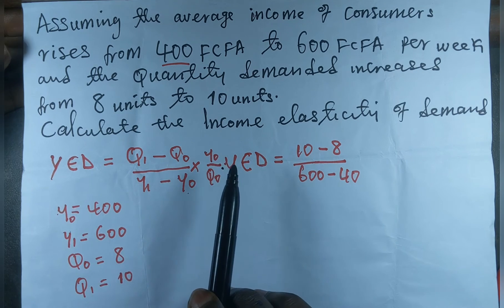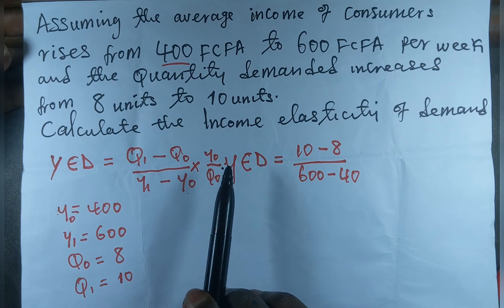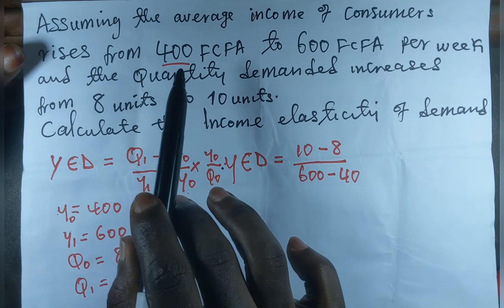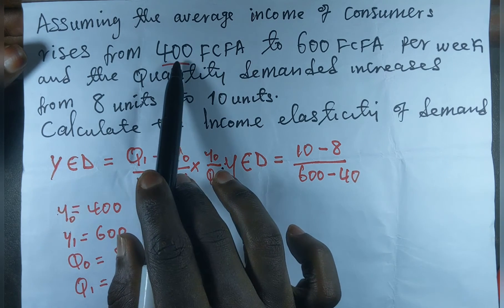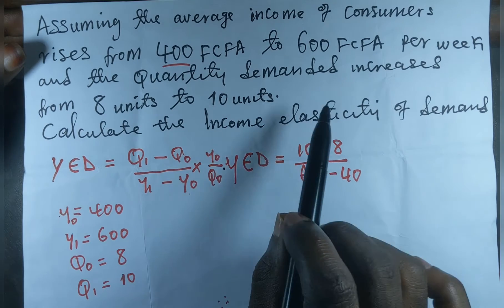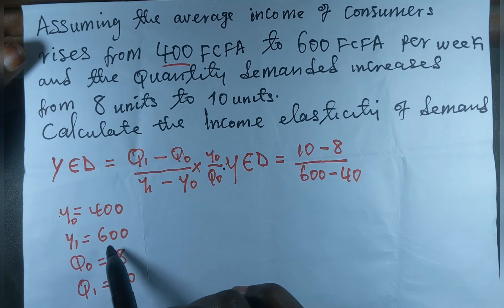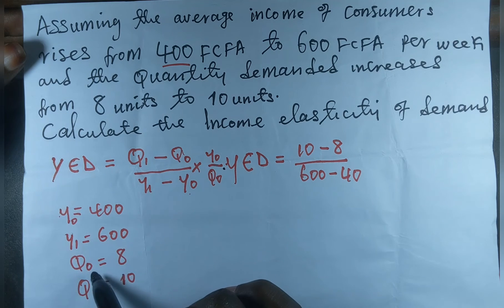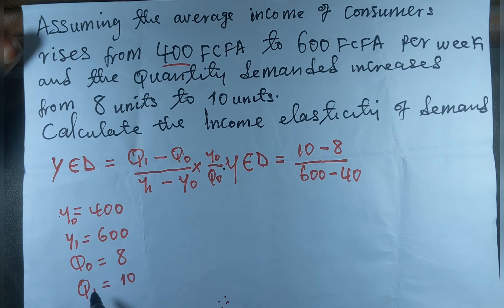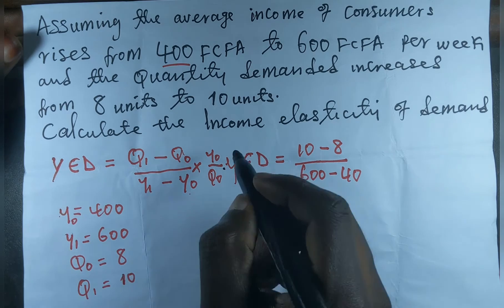We are going to identify our variables before we start the calculation. Y0, the initial income, is 400, and our final income Y1 is 600. The initial quantity demanded is 8 units, and the final quantity demanded is 10 units.